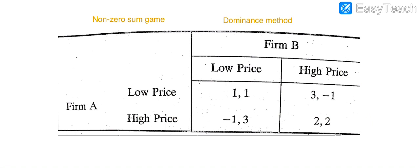In this table you can see two firms, Firm A and Firm B. I am giving separate colors so you can easily understand. I am giving the red color to Firm A. The first number in each cell is followed by Firm A — this is the first number, this is the first number — and the second number in each cell is followed by Firm B.